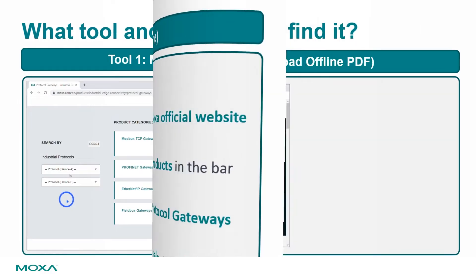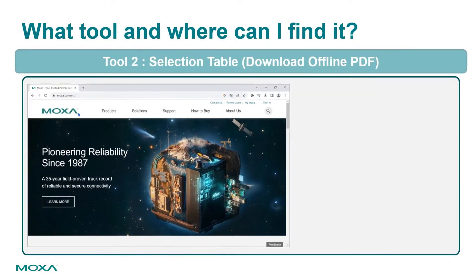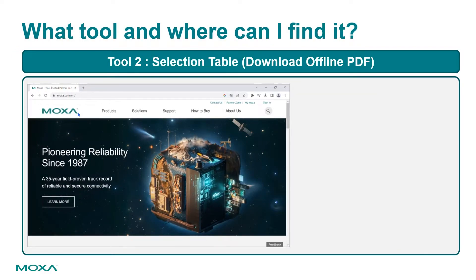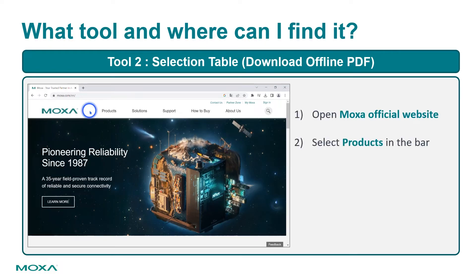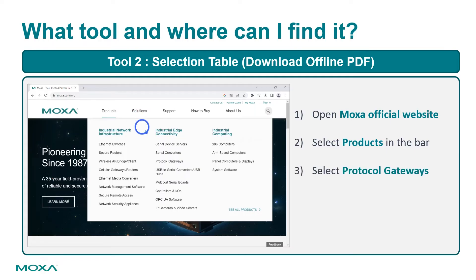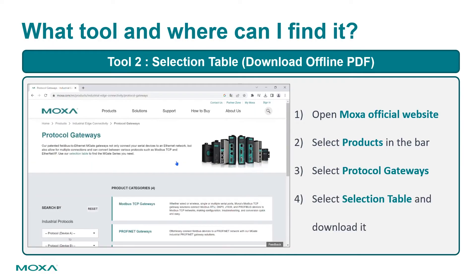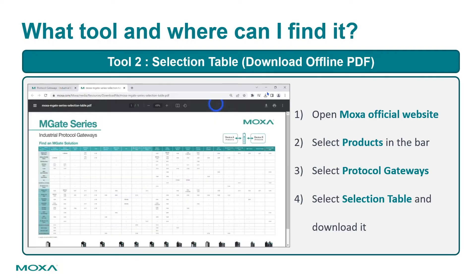The second tool is an offline PDF: the selection table. Select Products in the bar, then select Protocol Gateways under Industrial Edge Connectivity. Select the selection table and download it.